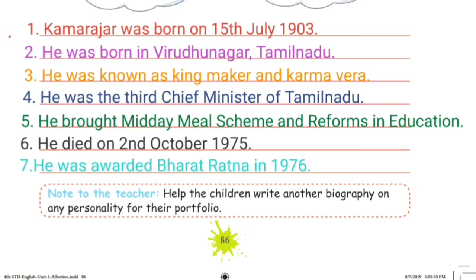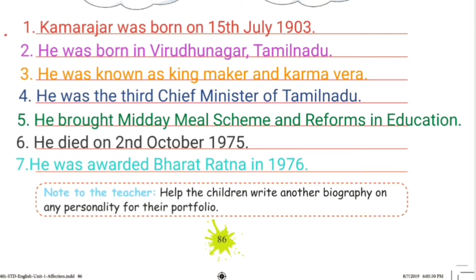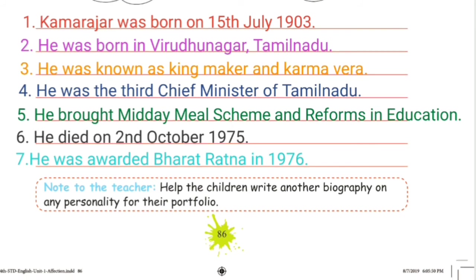Kamarajar was born on 15th July 1903. He was born in Virudhunagar, Tamil Nadu. He was known as Kingmaker and Karmavira. He was the third Chief Minister of Tamil Nadu. He brought the midday meal scheme and reforms in education. He died on 2nd October 1975 and was awarded the Bharat Ratna in 1976.